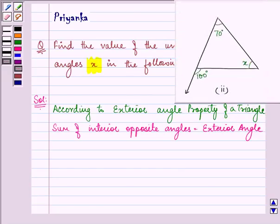Here we are given the interior opposite angles as 70 degrees and x respectively. Their sum, adding them up, will be equal to the exterior angle which is 100 degrees.